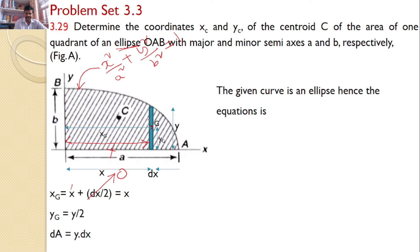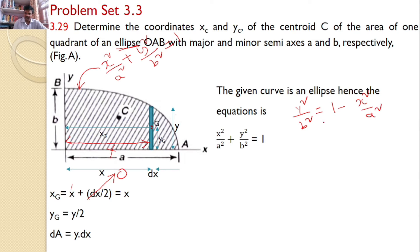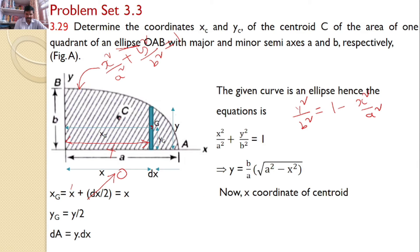The given curve is an ellipse, so the equation is X²/A² + Y²/B² = 1. From this, Y²/B² = 1 − X²/A², giving Y = (B/A) · √(A² − X²). From the fundamentals of centroid, the X-coordinate XC = ∫XG dA / ∫dA. We know XG = X and dA = Y · DX, so we need to integrate.